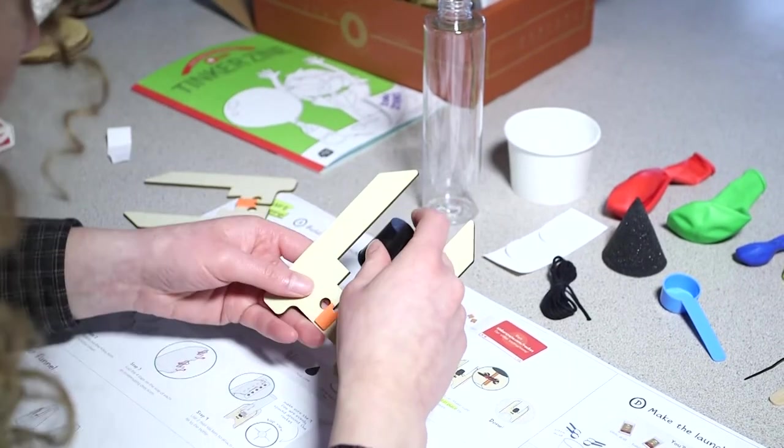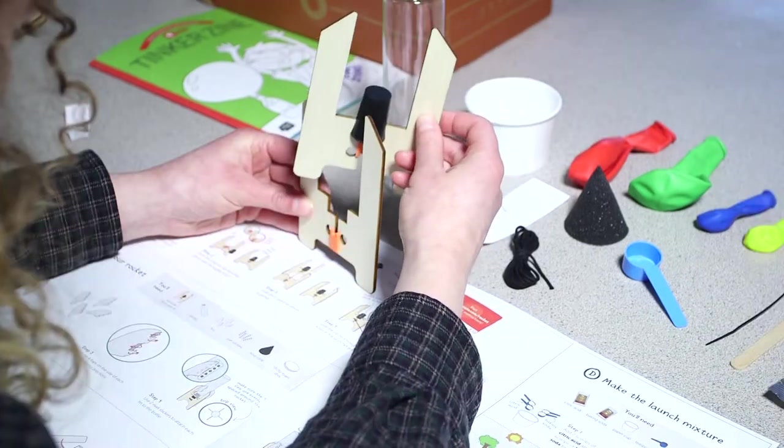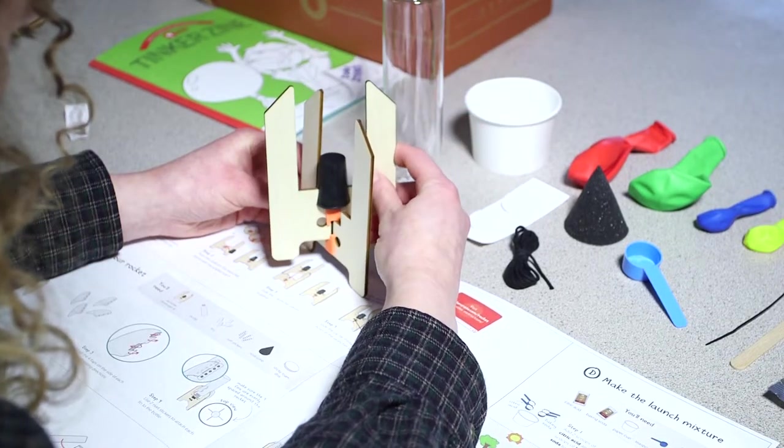Step number two: push the cork into the launcher piece with the angled notch. Step number three: slide the two launcher pieces together.